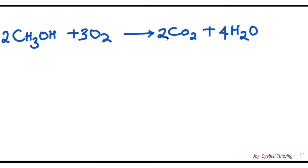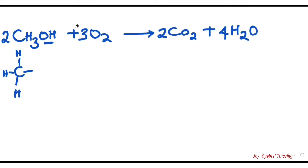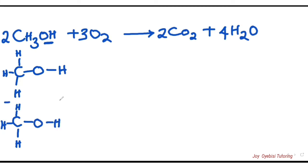The third step is to write out the structural formula for the equation. For methanol (CH₃OH), the structural formula shows three hydrogens and one OH group, with all bonds shown. We have two of them, so we write out both to make it easy when counting bonds. Then for oxygen, we have three molecules — oxygen double bonded to oxygen.